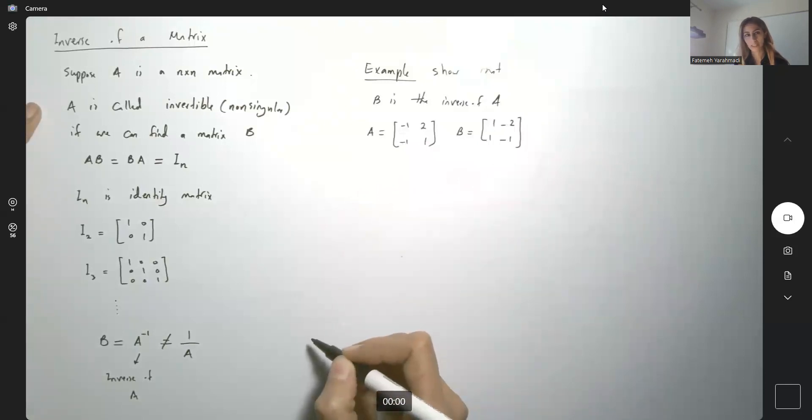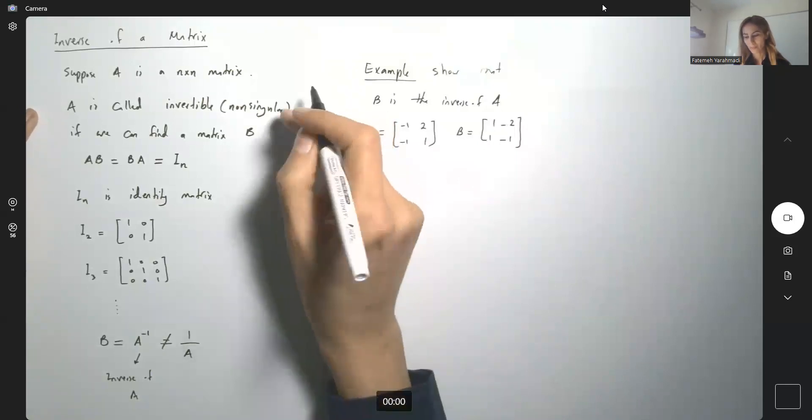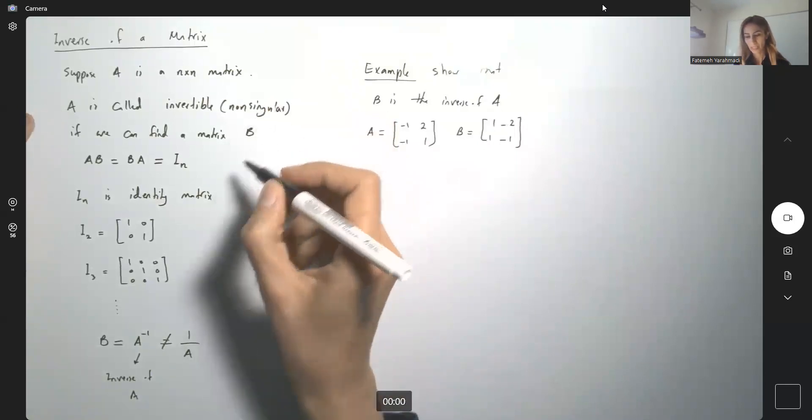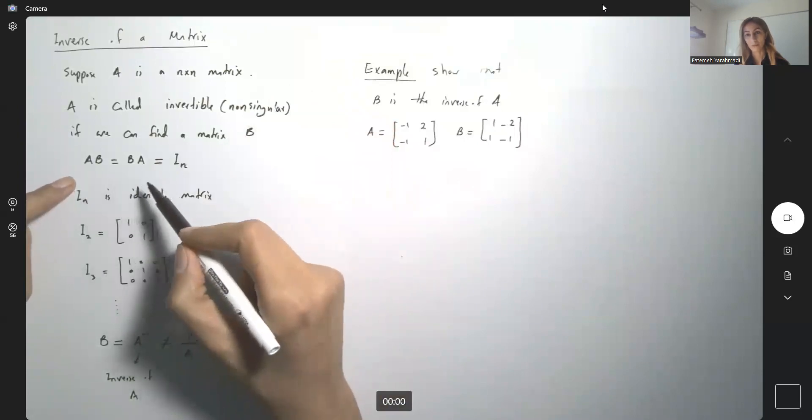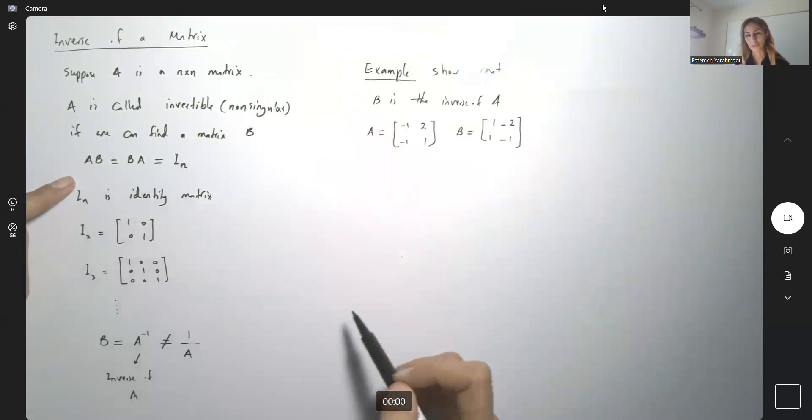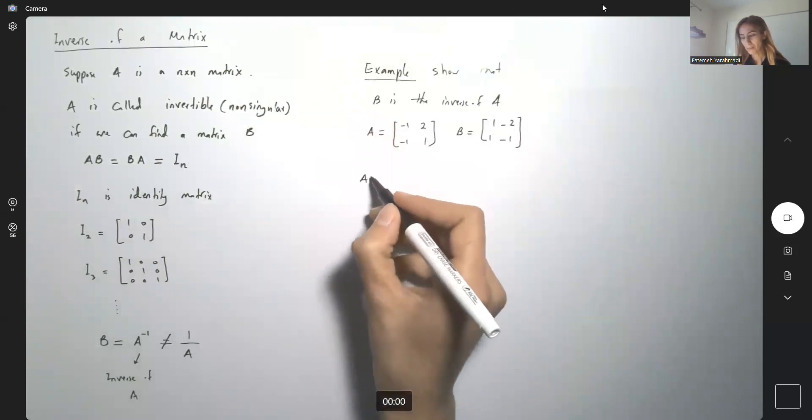So following the definition, A is called invertible or non-singular if we can find a matrix like B, where if you multiply A by B or B by A, the output is equal to identity matrix. So let's check AB.